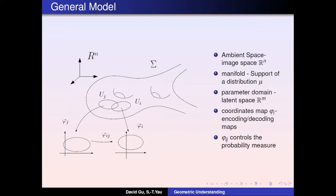Here we can see the mathematical definition. We use R^N to represent the ambient space, like the image space. In this space, we have a low-dimensional manifold sigma. The manifold is nonlinear — it's curved, and the topology might be complicated. This manifold is the support for the data distribution. We then map the manifold to the parameter domain, called the latent space or feature space. The dimension of the feature space equals the dimension of the manifold, which is really low. The mapping from the manifold to the latent space is called the encoding mapping, and the reverse mapping from feature space to the manifold is called the decoding mapping.